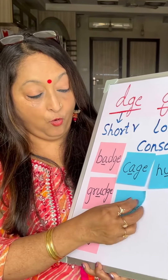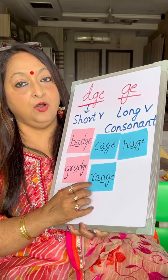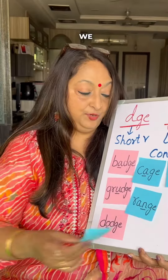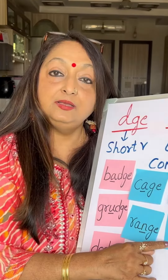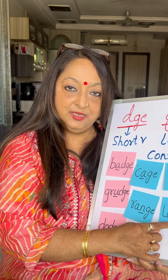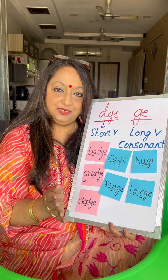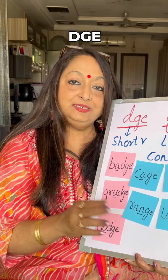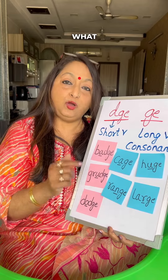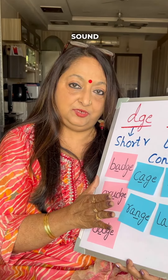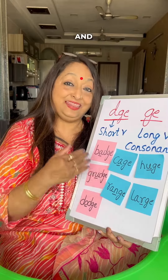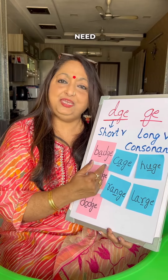Or if there is a consonant before the J sound, we use GE. 'Range' — N is the consonant, so we use GE. 'Large' — R is the consonant. We need to see what comes before the J sound: if it's a short vowel, long vowel, or a consonant, and then we can decide whether to use DGE or GE.